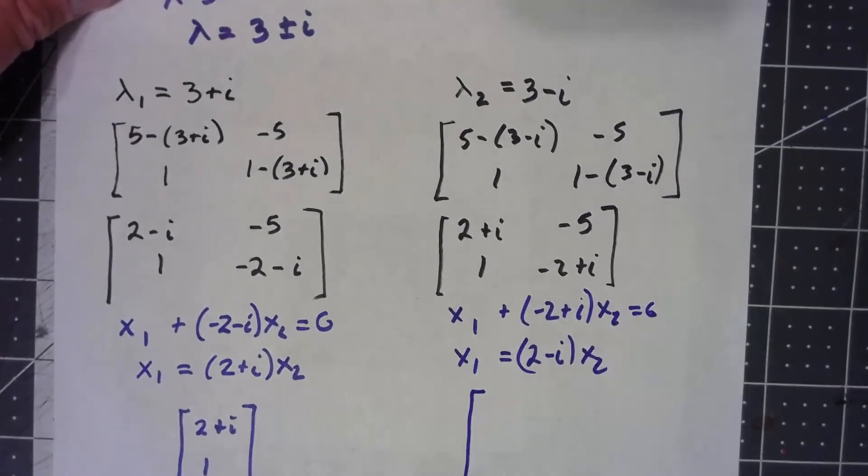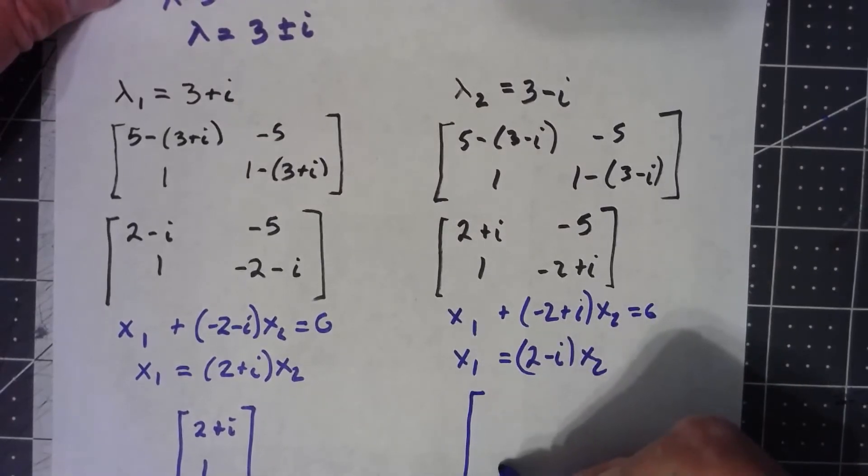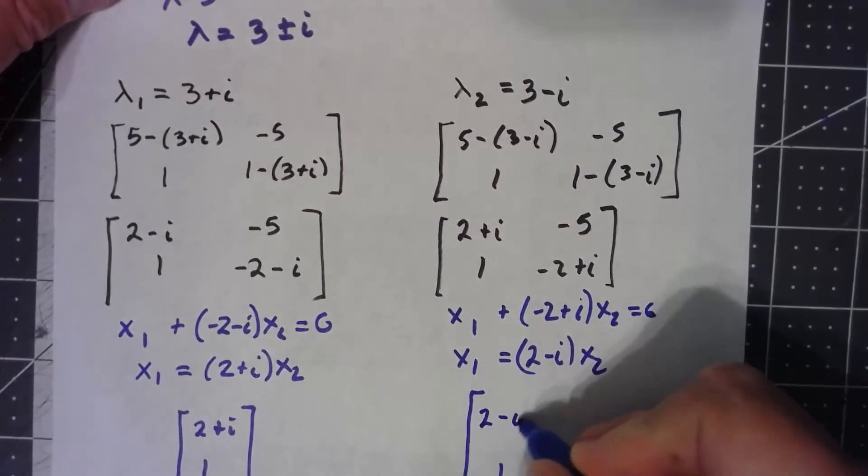And I get the eigenvector. If x2 is 1, we get a 2 minus i.